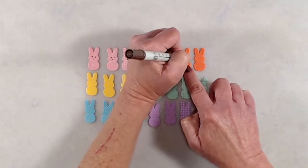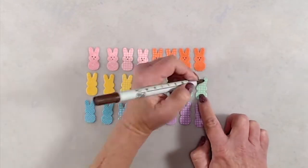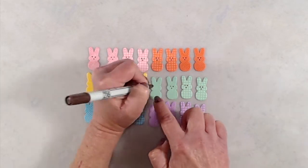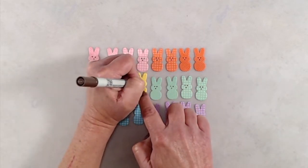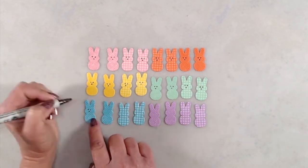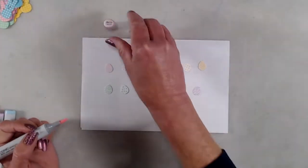After I was done cutting out all of those super cute bunnies, I decided that they needed to have some faces. So I used a brown marker and just did three dots on the face so I could have two eyes and a nose so that they would more resemble the peeps candy.